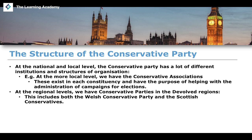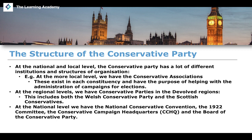We distinguish between the Conservative Party at Westminster, which is currently in power, and those in devolved institutions such as the Scottish Conservatives, who present a considerable challenge to the SNP, though the SNP remains the majority party in Scotland. At national level, there are four key institutions: the National Conservative Convention, the 1922 Committee, the Conservative Campaign Headquarters (CCHQ), and the Board of the Conservative Party.